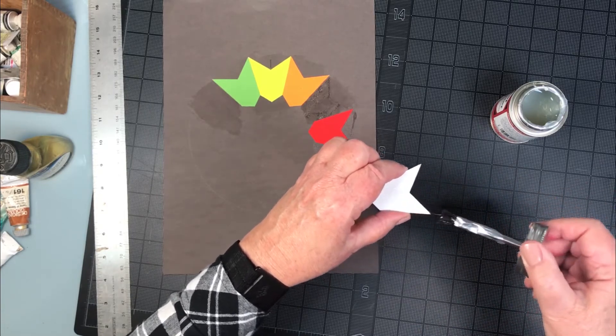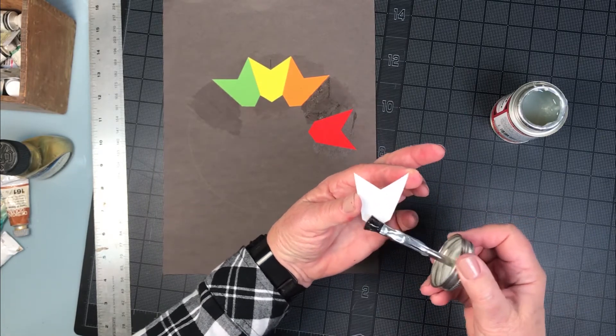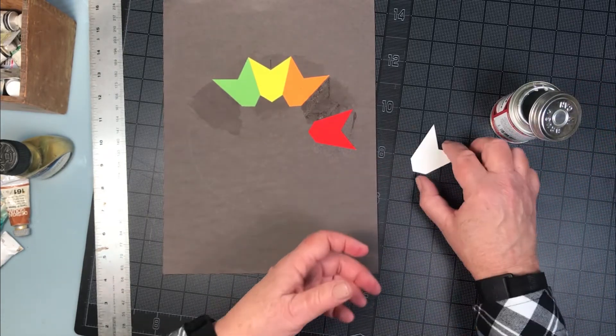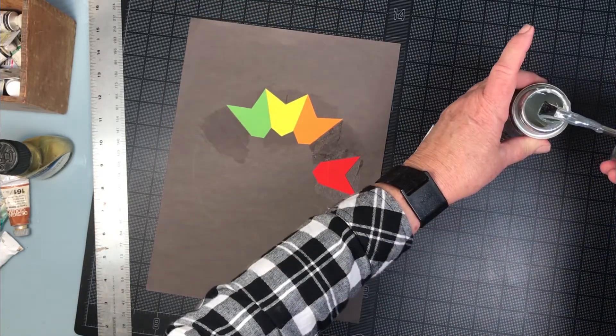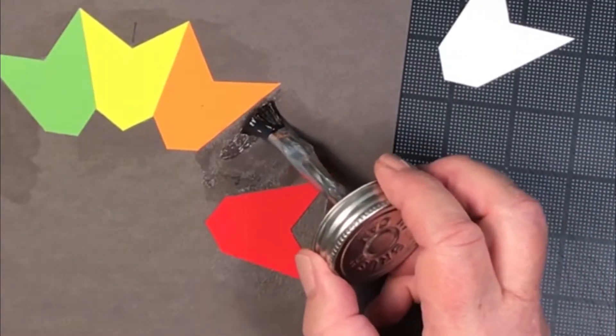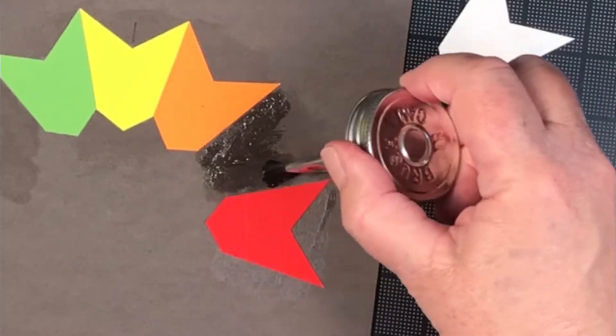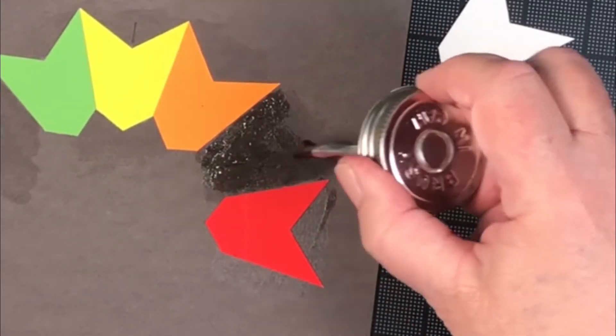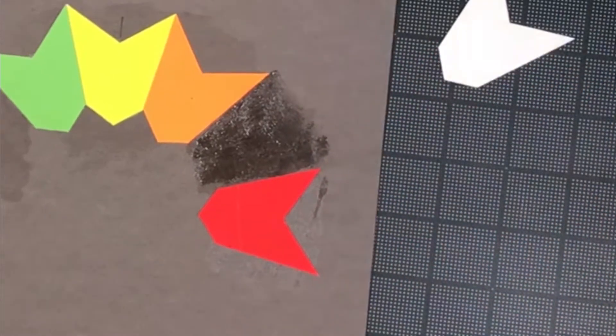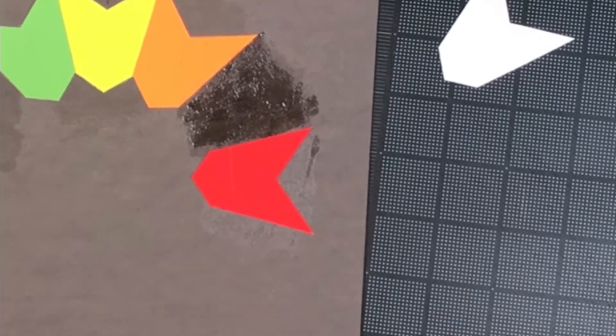This is the replacement swatch for that orange, which wasn't working because it was too transparent and not robust enough. I'm just going to redo this. Again, thin coat.